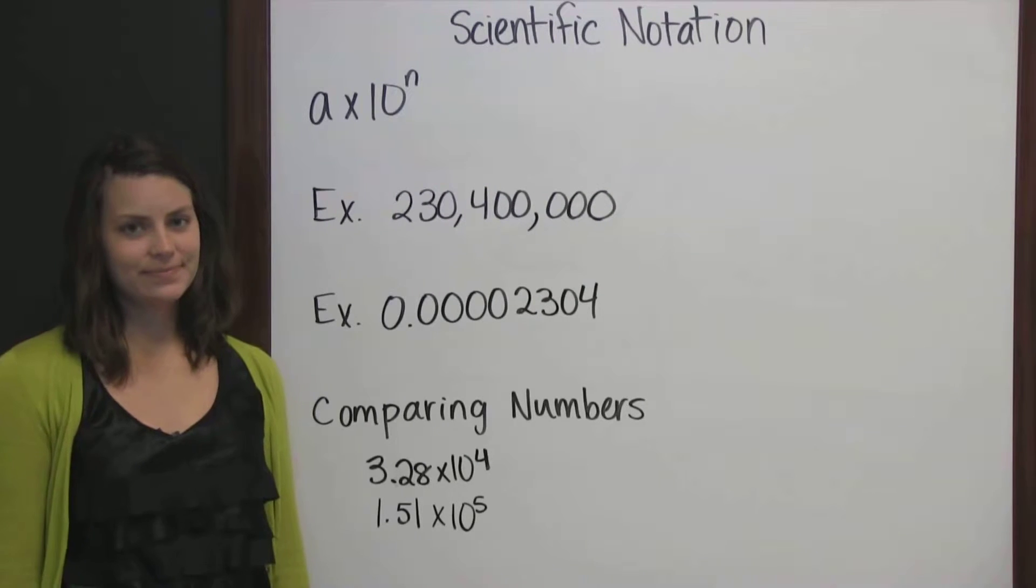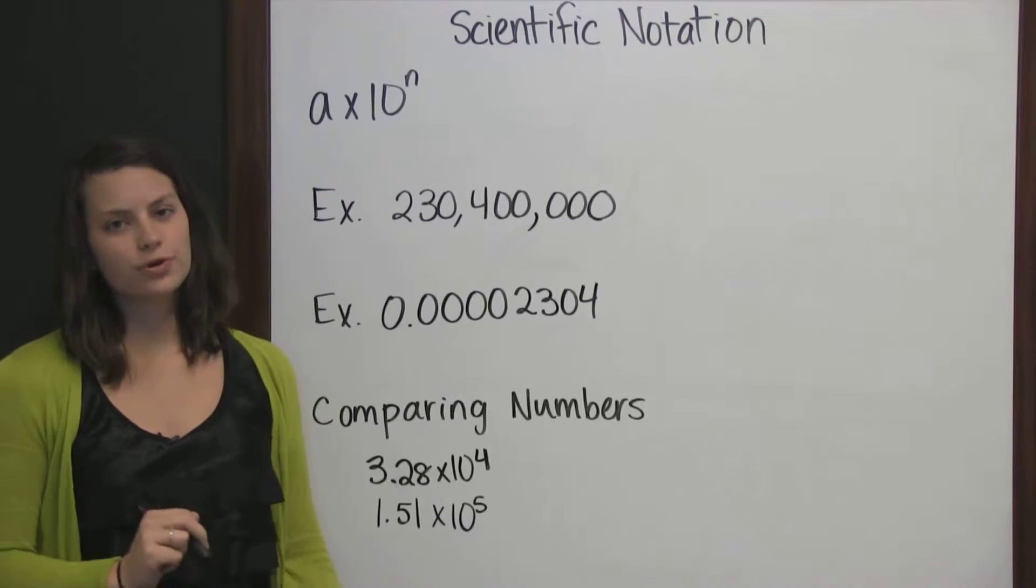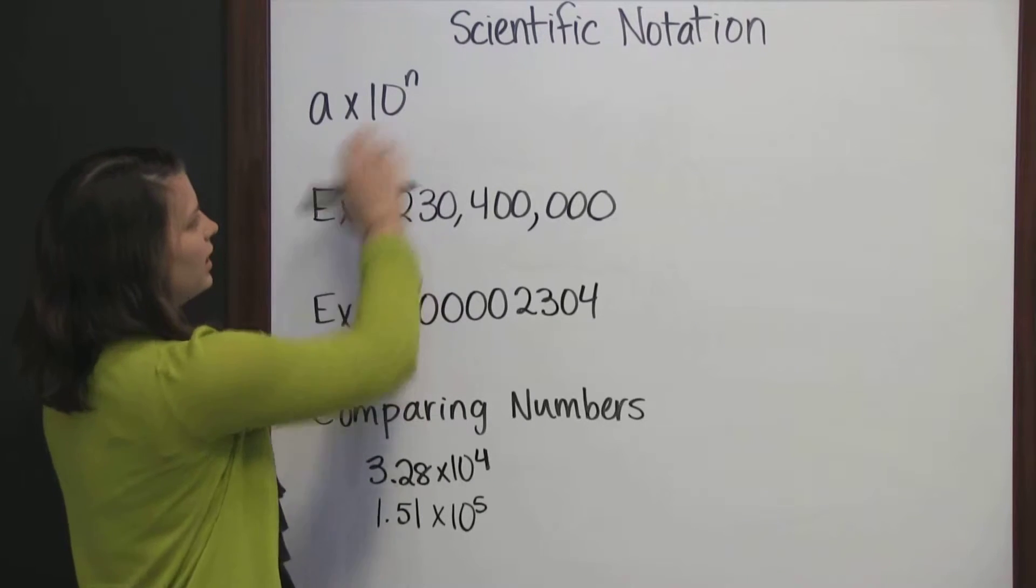Scientific notation. Scientific notation is used to write larger numbers in a shorter form, and the form is a times 10 to the n.